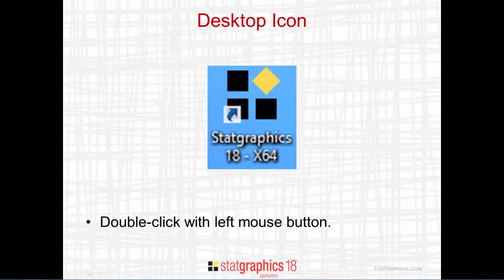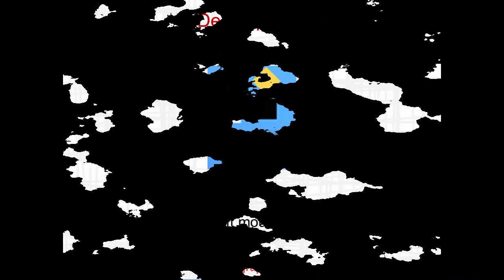When StatGraphics 18 is downloaded and installed on your computer, an icon similar to that shown here is created on your desktop. To start the activation process, double click on the icon with your left mouse button.